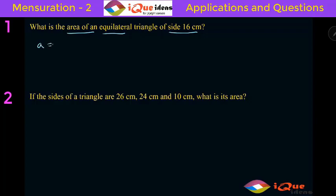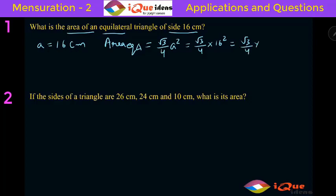Let's say the side A is 16 centimeter. Now the area of equilateral triangle has a direct formula which is equal to root 3 by 4 into the side square. So it is equal to root 3 by 4, where side A is equal to 16, so it is 16 square. Now 16 square is 256, so it is root 3 by 4 into 256. 4 cancels 256 64 times, so the final answer will be 64 root 3 centimeter square.